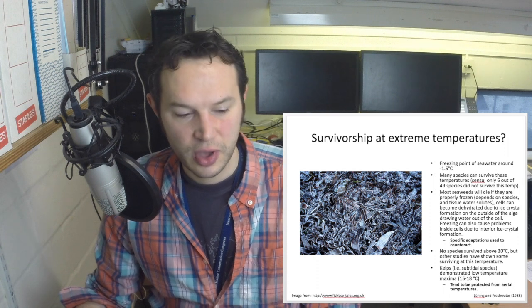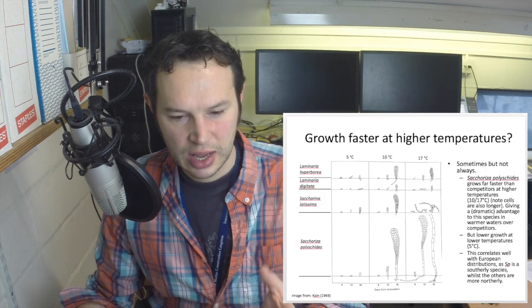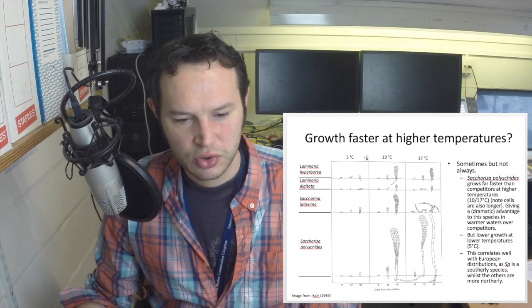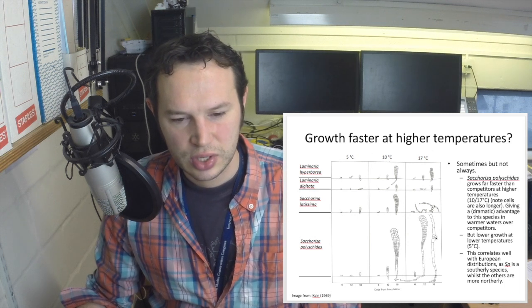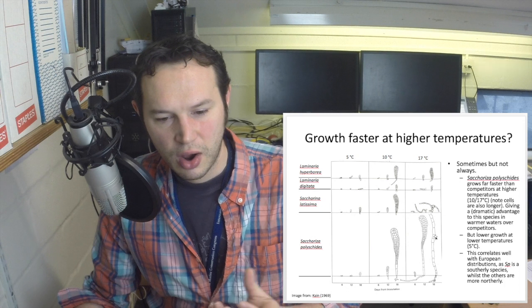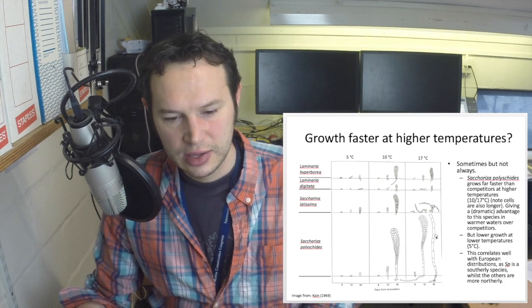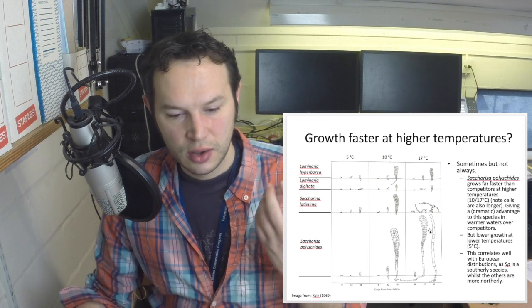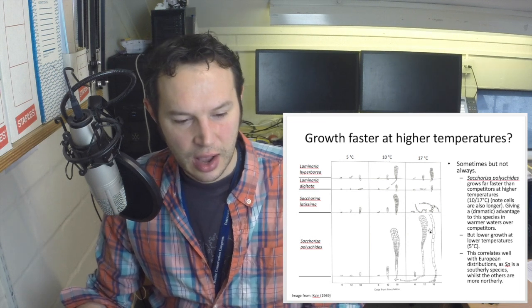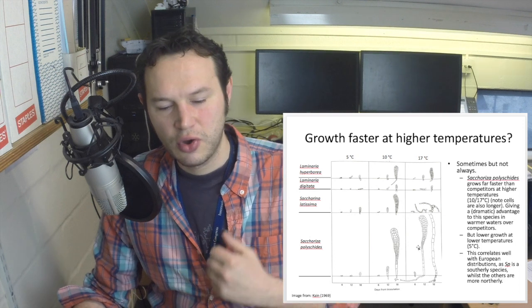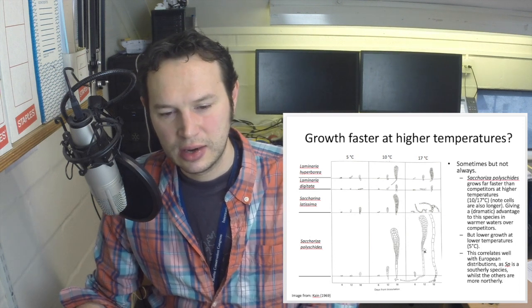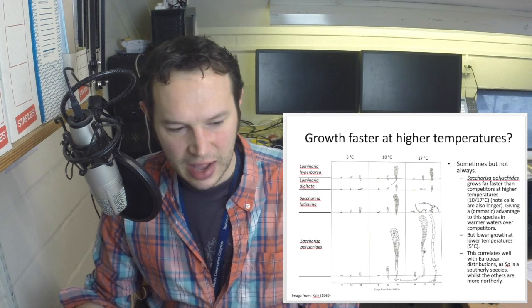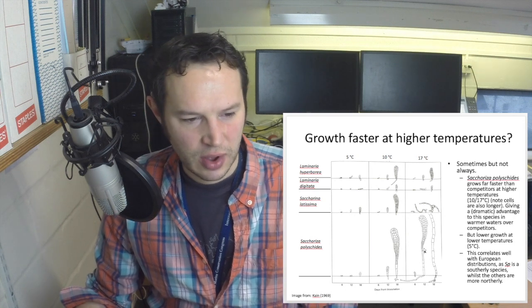We can see here in some species of kelps that they tend not to grow terribly well at high temperatures. Their growth is slower or truncated or even distorted. Some species, on the other hand, such as Ulva, warmer adapted species like Saccharina polyschides grow exponentially better in higher temperatures, giving them an extreme competitive advantage in those environments where it's found.